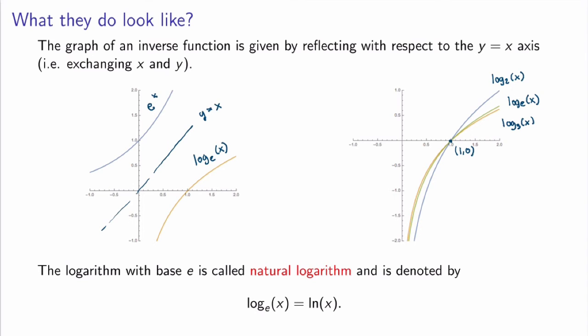The logarithm with base e is so important that it has its own name and symbol. It's called the natural logarithm, denoted ln. It is the inverse function of e^x. Just as e^x is one of the most beautiful functions ever, ln is also extremely beautiful — it satisfies all kinds of nice properties.